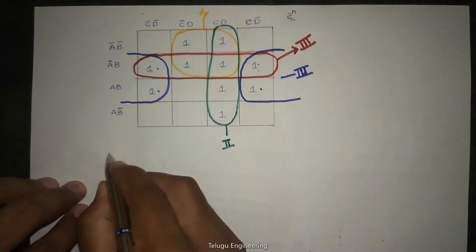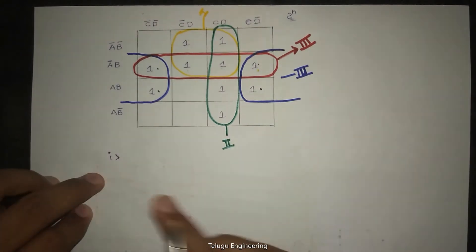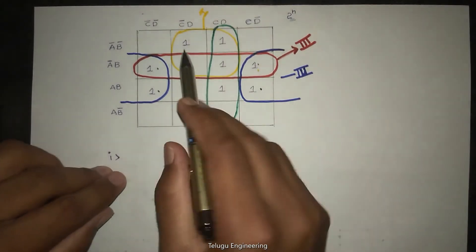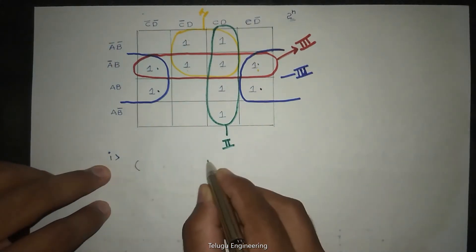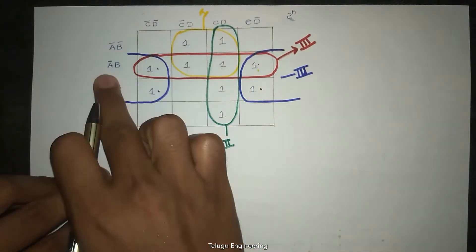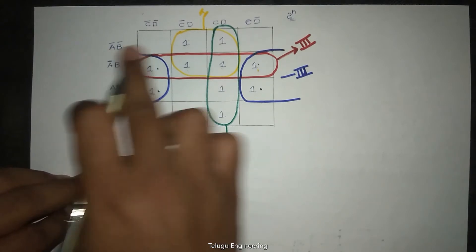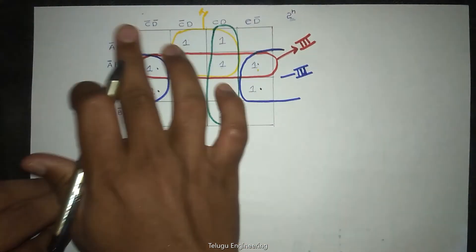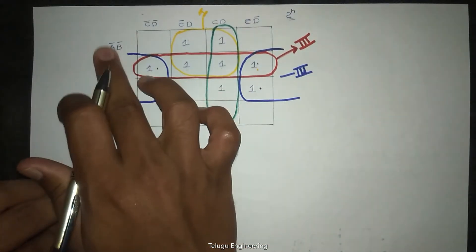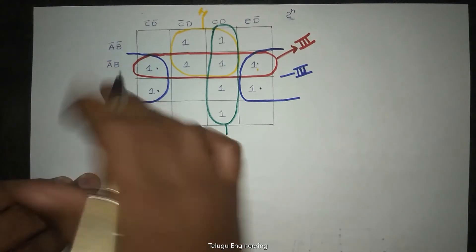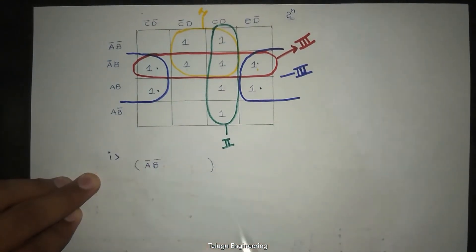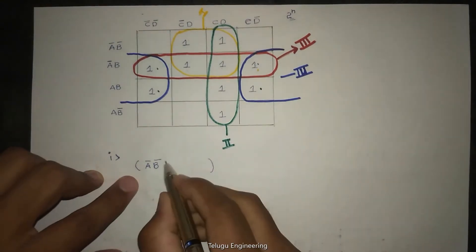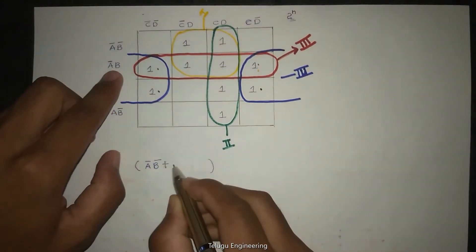We have to make equations from this. I will do it group by group because it is confusing. So first group - this is the first group. Inside are the min values. Like this group, inside is A bar B bar and A bar B.